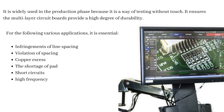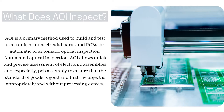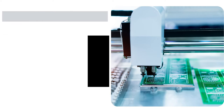For the following various applications, it is essential: infringements of line spacing, violation of spacing, copper excess, shortage of pad, short circuits, and high frequency. AOI is a primary method used to build and test electronic printed circuit boards. Automated Optical Inspection allows quick and precise assessment of electronic assemblies and, especially, PCB assembly to ensure that the standard of goods is good and that the object is appropriately built and without processing defects.